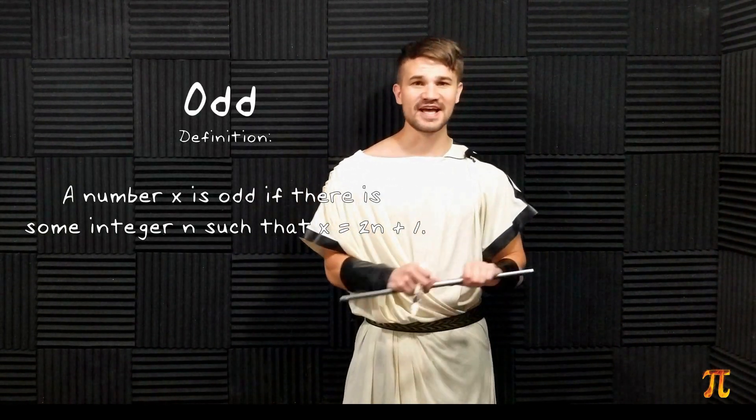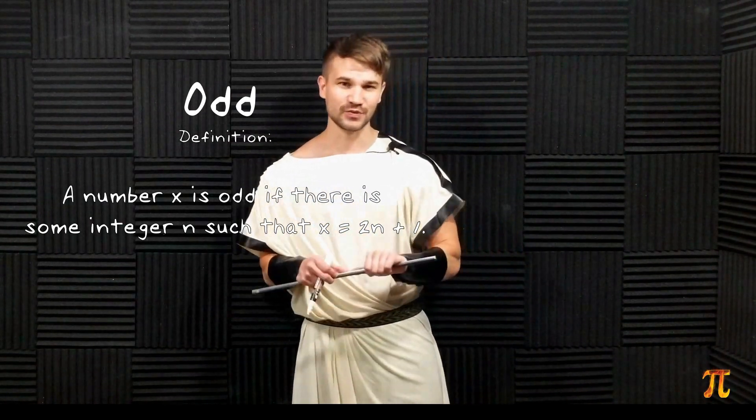Anyway, that's going to be our working definition for an even number. Our working definition for odd will be sort of the same except we'll add one to our expression. That is, a number x is odd if there exists an integer n such that x is equal to 2n + 1. Okay, now that we have some nice working definitions, let's attempt to prove our statement. We want to prove that the sum of two odd numbers is an even number.